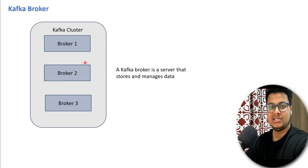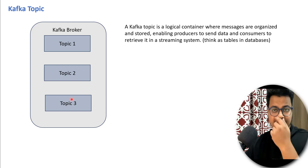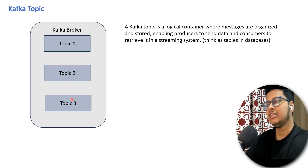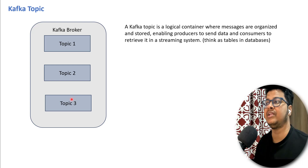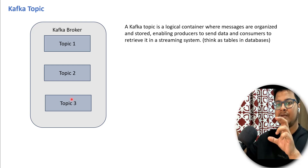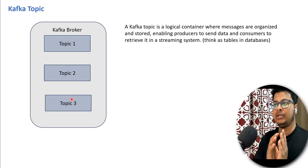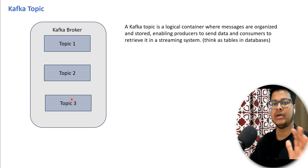If I zoom into a Kafka broker, a Kafka broker can have different topics inside it. Here I mentioned three topics, but it can have any number of topics. You can think of a Kafka topic as a logical container where messages are organized and stored, enabling producers to send data and consumers to retrieve it in a streaming system. Think of it as a table in a database — it's just a container abstraction, like how you store data. You are sending all your data to a particular topic, just like a table in a traditional relational database — a place where you store the data.